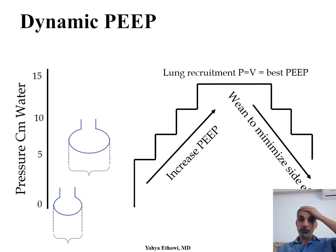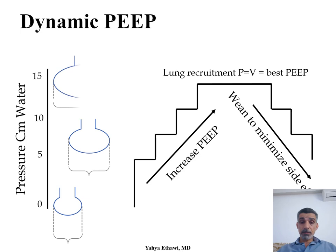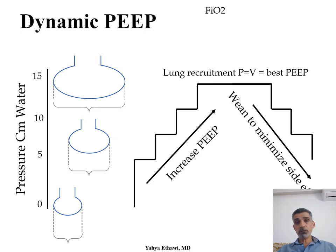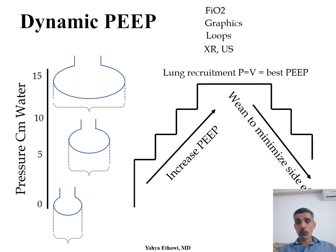How to achieve the best PEEP: I pick a number — let's say 5 — then increase to 6, 7, 8, 9, 10, 11, 12, whatever is needed to achieve a good FiO2, or the lowest possible FiO2 to achieve the target saturation range, the best graphics, best loop, good x-ray, ultrasound, and better blood gas.